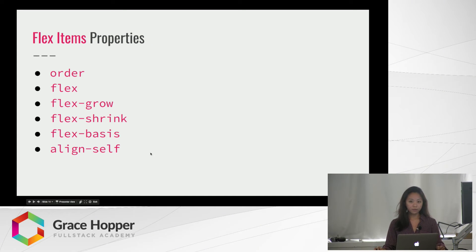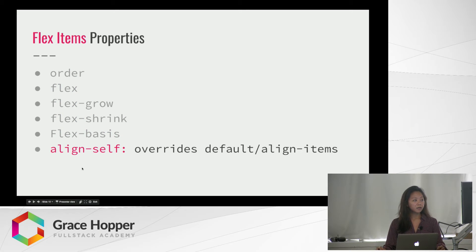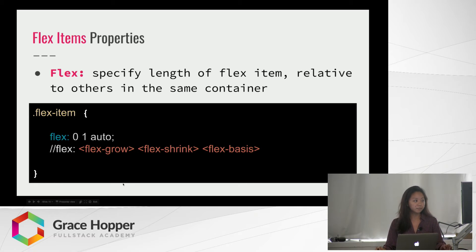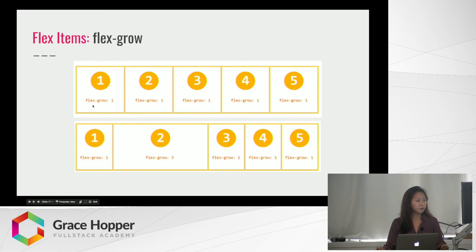Each Flex item within a Flexbox also has its own set of properties. Align self will override the default align items. And you also have the Flex property, which sets the growth and shrink factors for an item, specifying the item length relative to the rest. For Flex grow, if items all have the same growth factor they all take up the same amount of space. But if number two has a Flex grow of three, it will take up three times the amount of space.